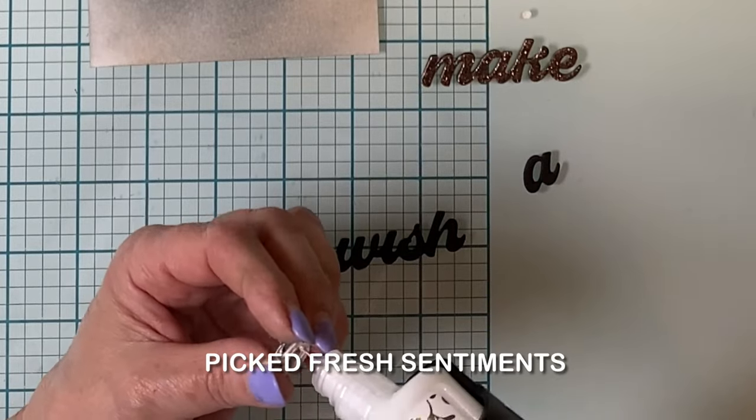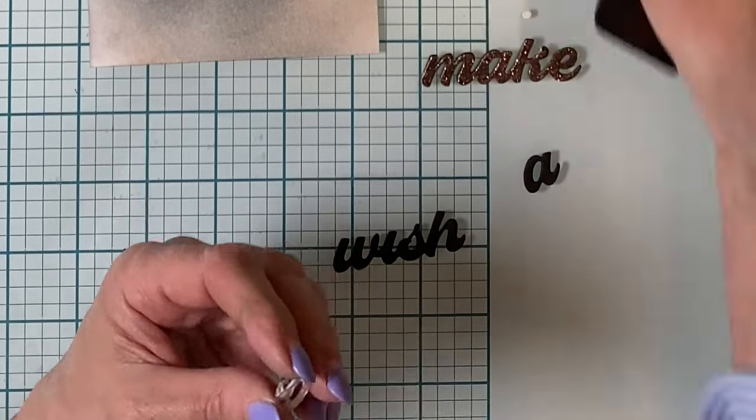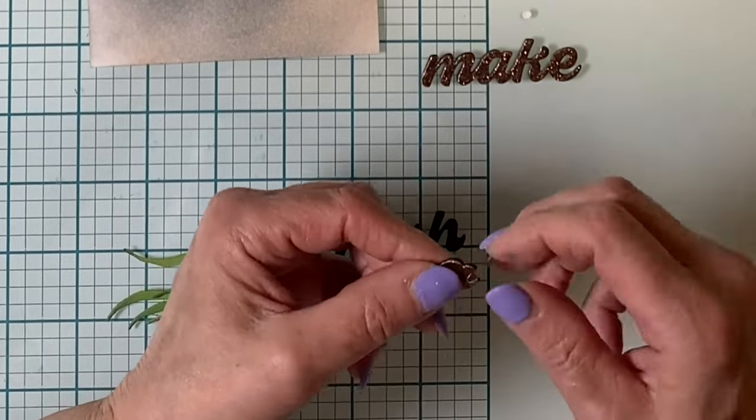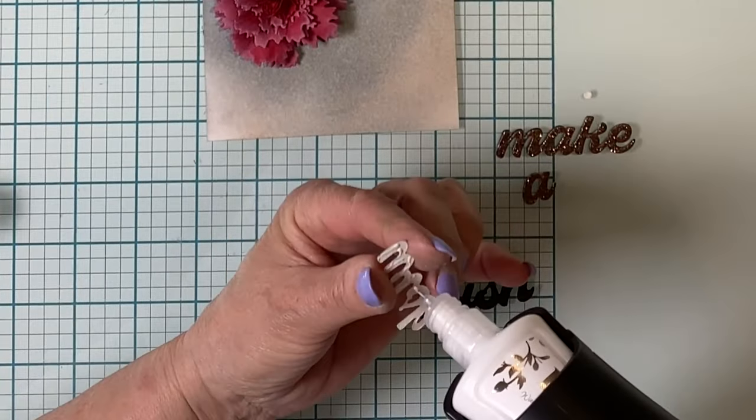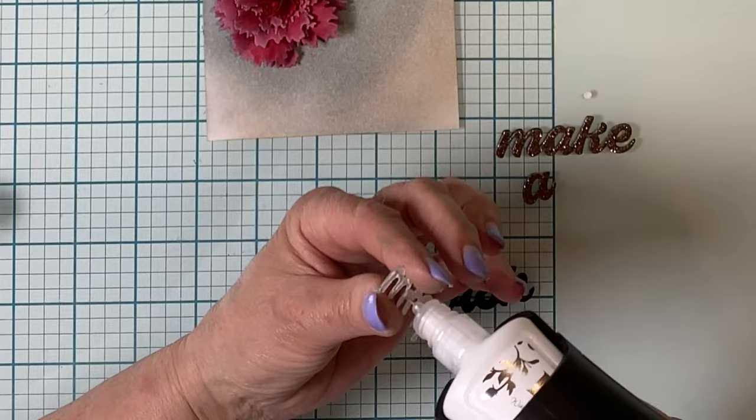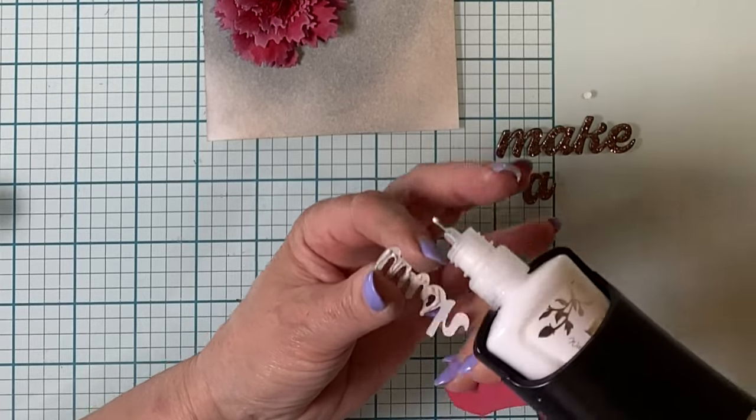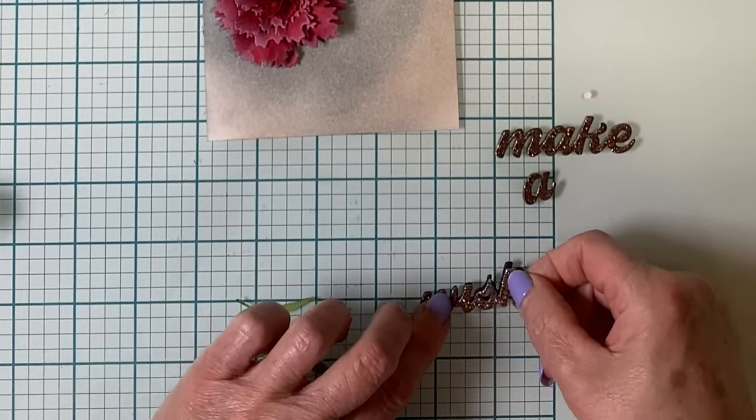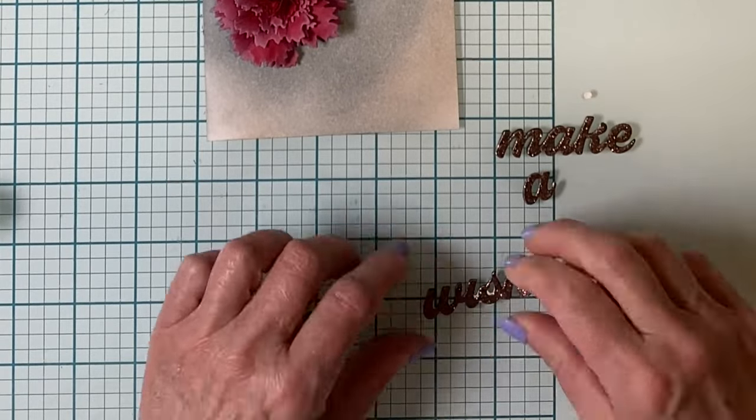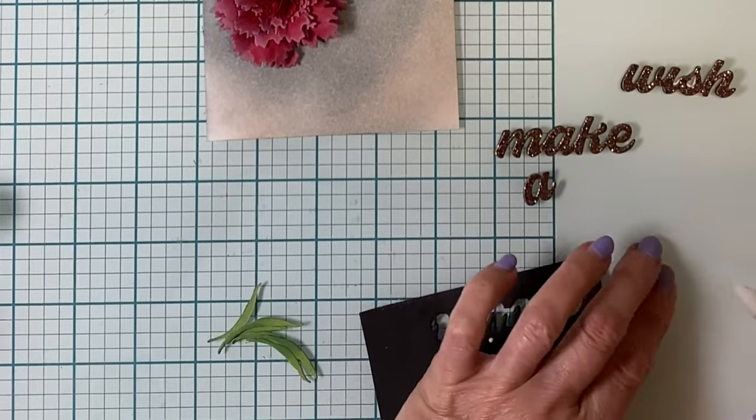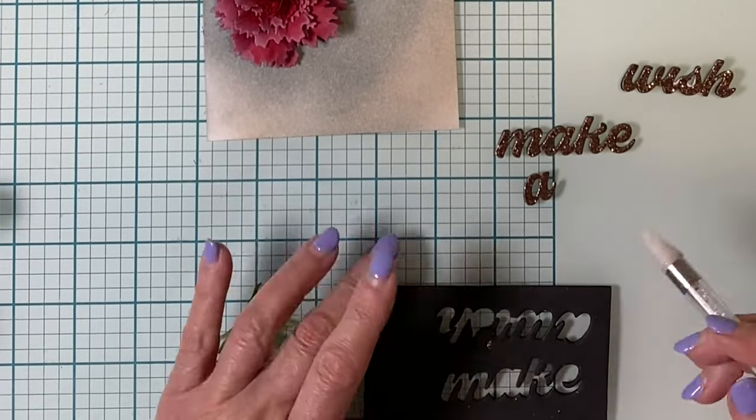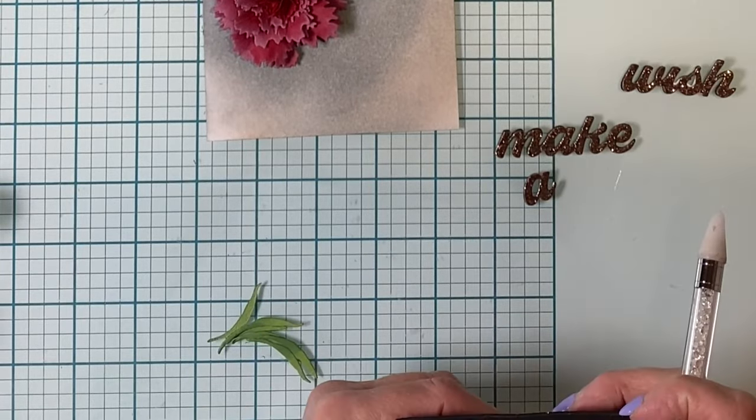I've used a set called Picked Fresh Sentiments. It has been die cut from both black sheet foam and bronze glitter cardstock. This die set has a thicker font making it very easy to stack the glitter cardstock die cuts to the foam ones. These are super easy to line up. For the dot for the I, I left the foam die cut in the backing, put some glue on it, and then used the jewel picker to put the die cut in place.